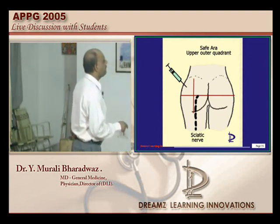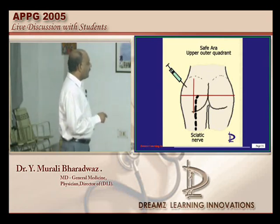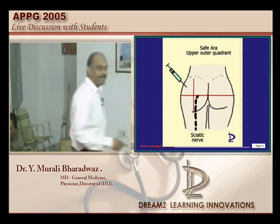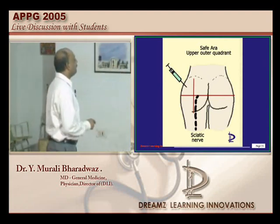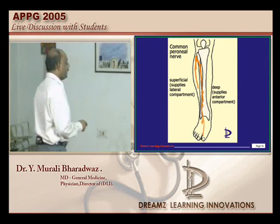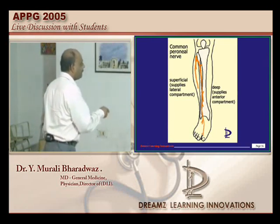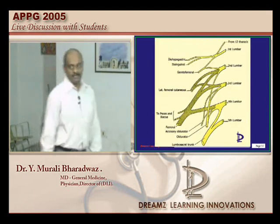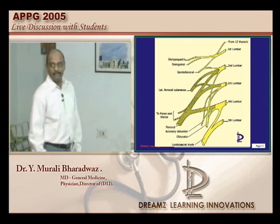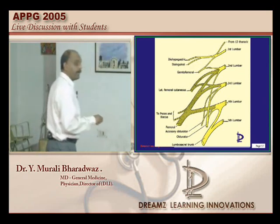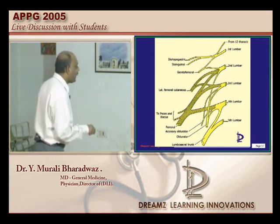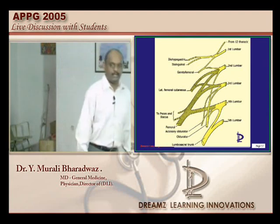The sciatic nerve is the thickest nerve, passing below the level of the piriformis muscle. When giving an intramuscular injection, the safest zone is the upper outer quadrant. The common peroneal nerve divides into two branches — superficial and deep. The superficial supplies the lateral compartment and the deep supplies the anterior compartment. The branches of the lumbar plexus are: iliohypogastric, ilioinguinal, genitofemoral, lateral femoral cutaneous, nerve to sartorius and iliacus, femoral, accessory obturator, and obturator — all purely deriving from the lumbar plexus.